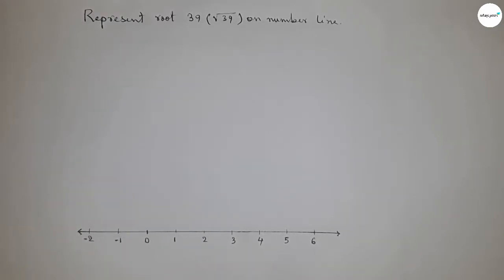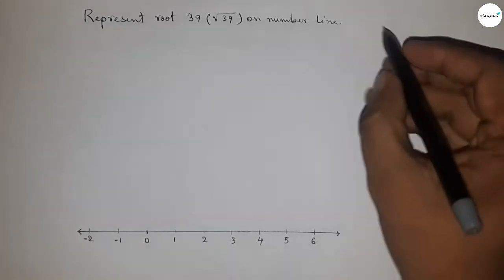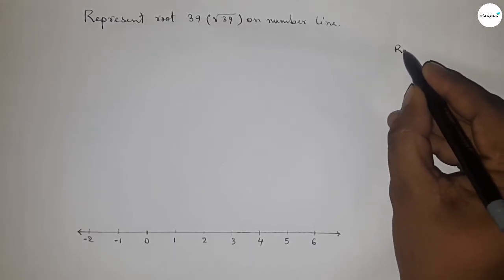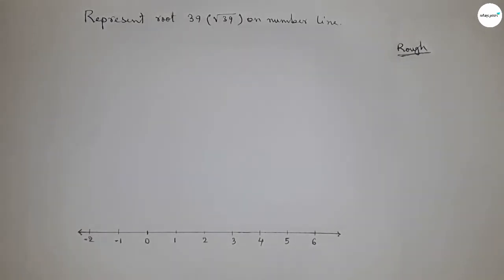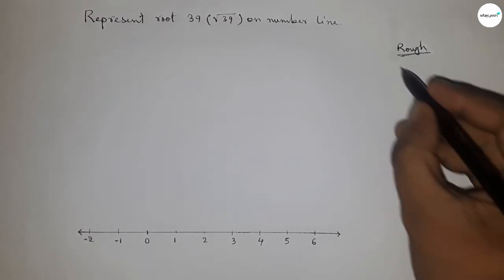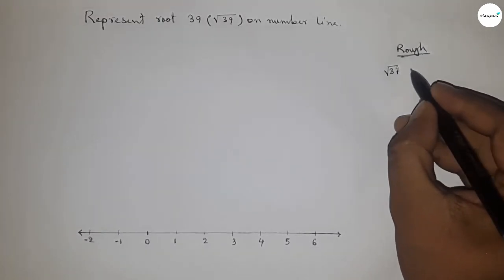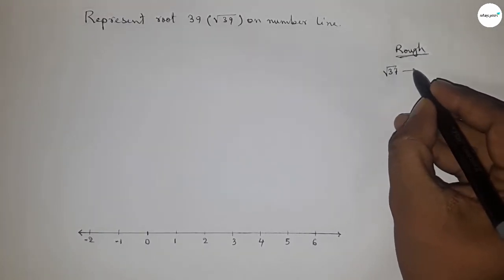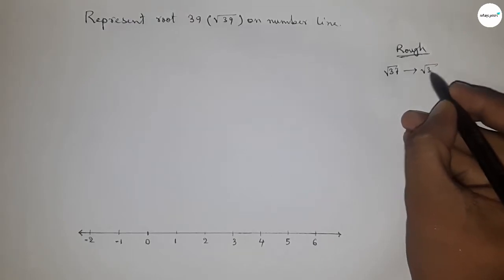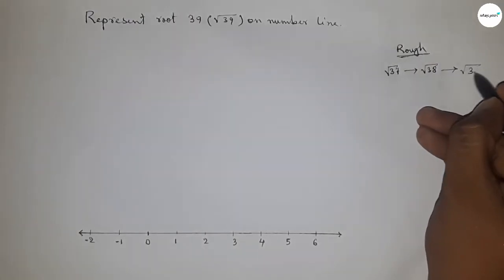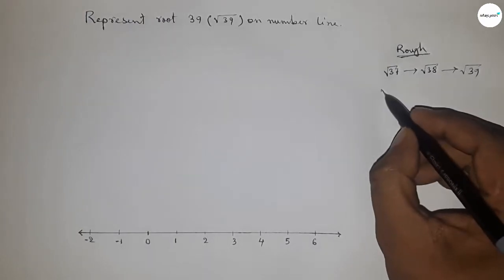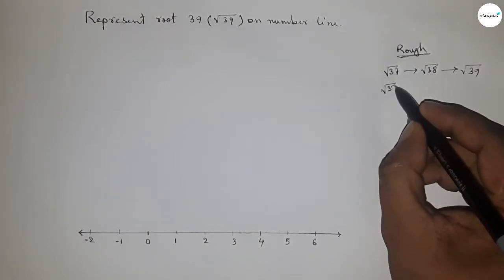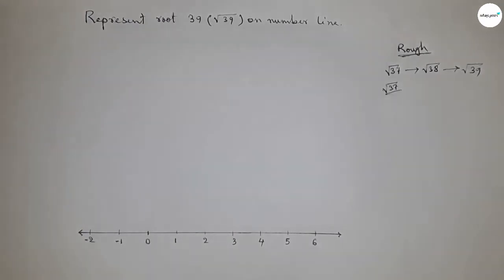Now roughly discussing the calculation: we first have to represent root 37, then root 38, and finally root 39. So let's start by discussing root 37.